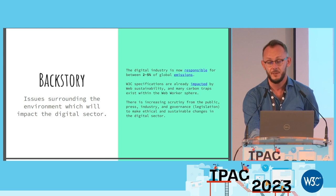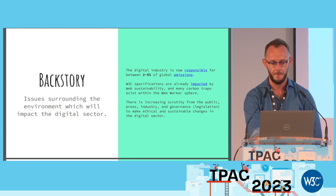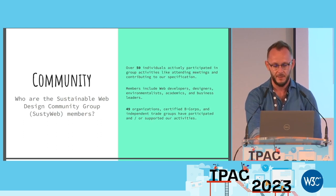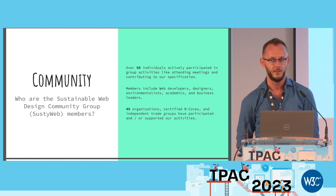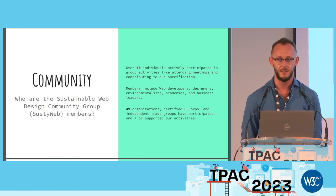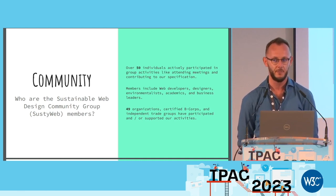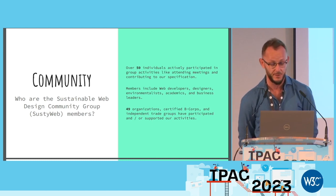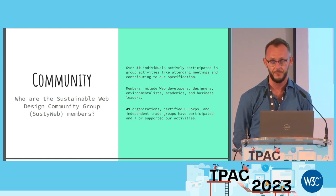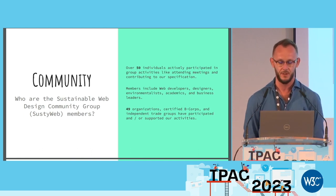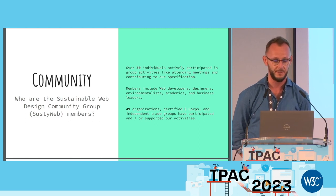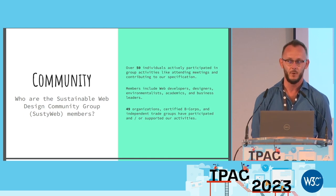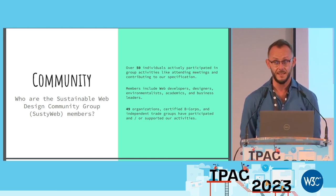Inspired by the work W3C has been doing over the years around web accessibility — creating a web that's accessible for everyone — the Sustainable Web Design Community Group started work in 2020 to create guidelines for web creators to make sure their content has as small a negative impact on the environment as possible. Individuals from almost 50 organizations have been working for more than 15 months, with expertise spanning web development, design, environmentalism, academia, and business leadership.